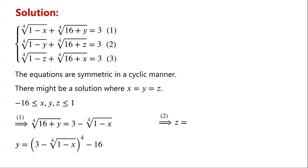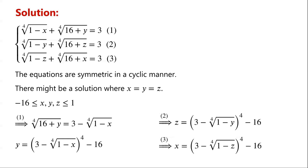Similarly, from equation 2 we have z equals (3 minus the fourth root of 1 minus y) all to the power of 4, minus 16. And from equation 3 we have x equals (3 minus the fourth root of 1 minus z) all to the power of 4, minus 16.